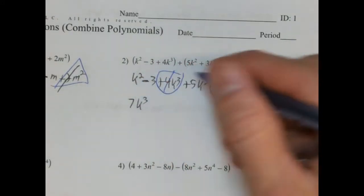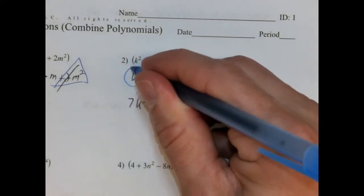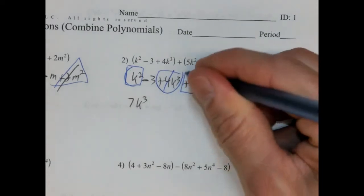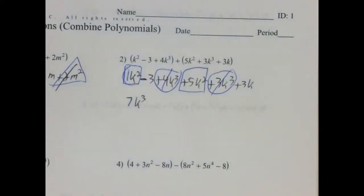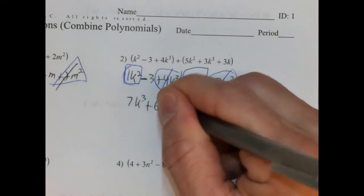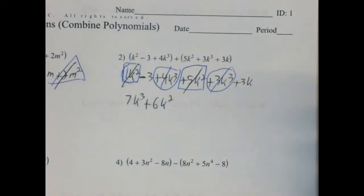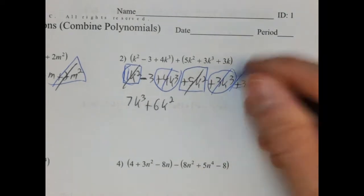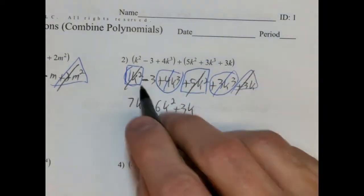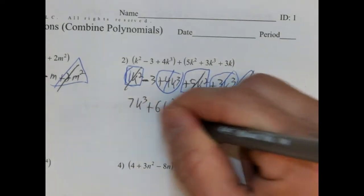Cross those out. And then we have squared, so we have k squared and 5k squared — that's 1k squared. So 1 plus 5 is plus 6k squared. And do we have any k to the first power? We do — we have plus 3k. And then we have negative 3. And that's it.